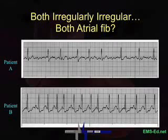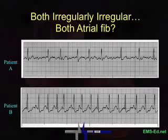Time's up. Remember, the definition for AFib is irregularly irregular with no discernible P waves. Both patients are irregularly irregular, but one patient has discernible P waves.